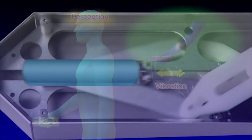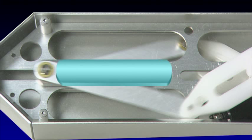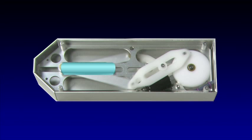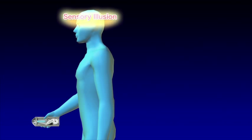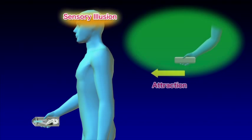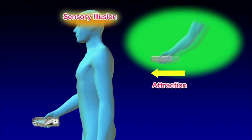However, if the slider is made to accelerate rapidly in one direction and decelerate gradually in the other, a person would only feel the former rapid movement. In this way, a sensory illusion is created in which the vibration is felt like an attraction force.